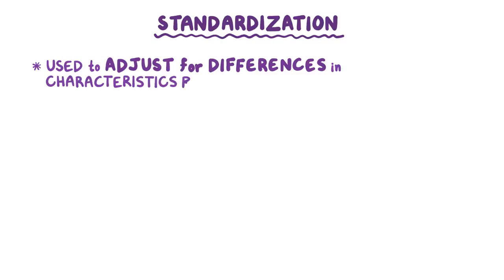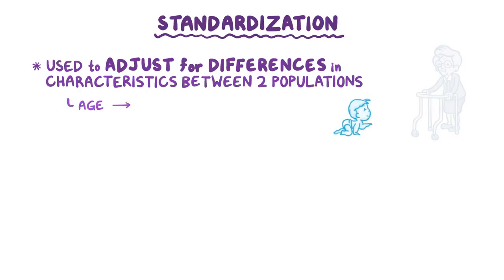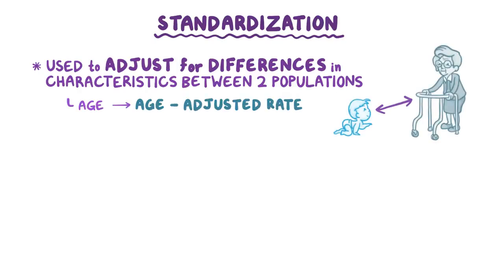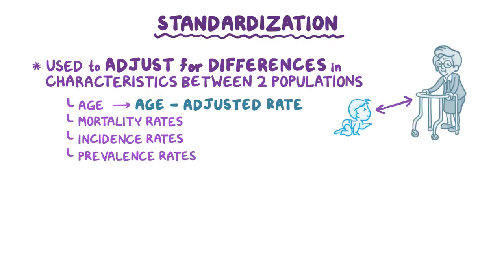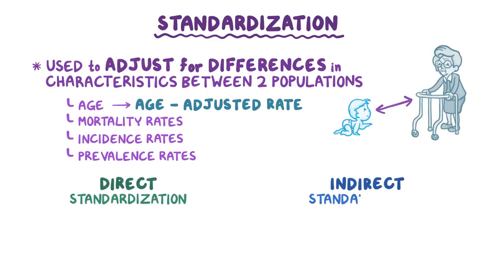Standardization is a method used to adjust for differences in characteristics between two populations. When standardization is used to adjust for age, the result is called an age-adjusted rate. Standardization is often used to adjust mortality rates, but it can also be used to adjust incidence rates — the frequency of new diseases — or prevalence rates, the frequency of currently existing diseases. There are two ways to calculate standardized rates: direct standardization and indirect standardization.